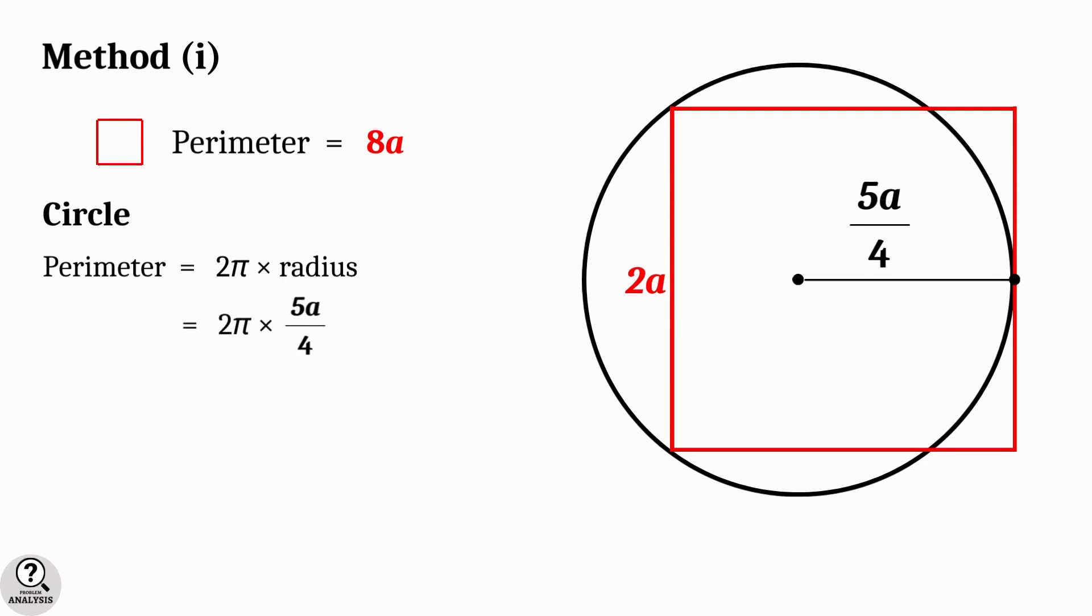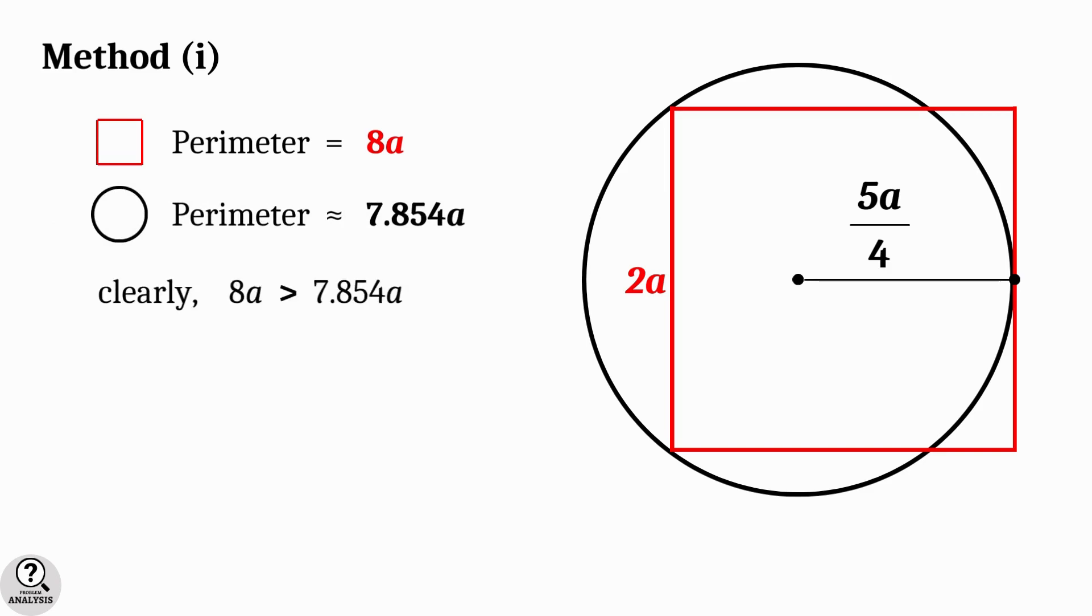At the same time, for the circle, perimeter or the circumference is equal to 2π times radius, which is equal to 2π into 5 by 4 times a, equal to 5π by 2 times a units. This is approximately equal to 7.854 times a units.